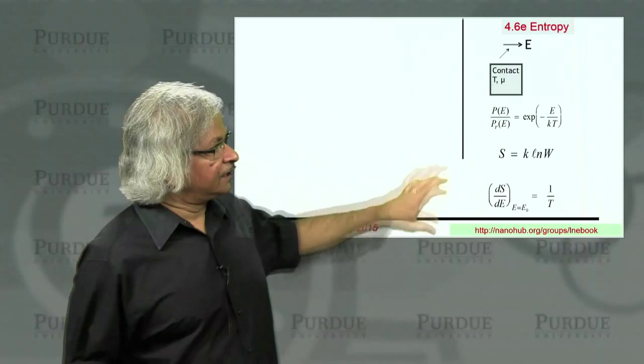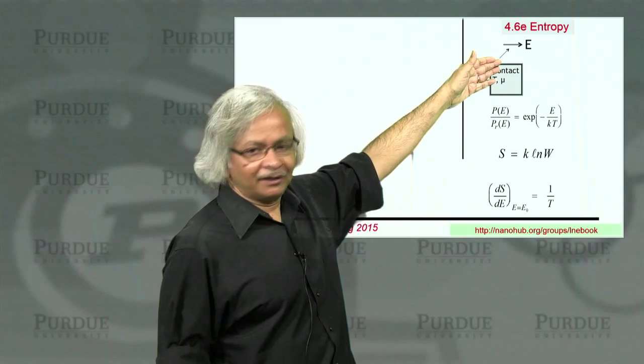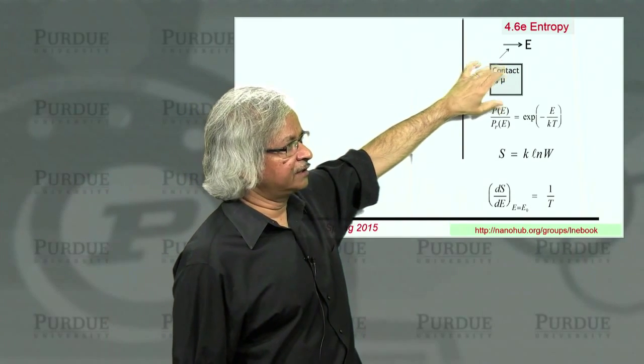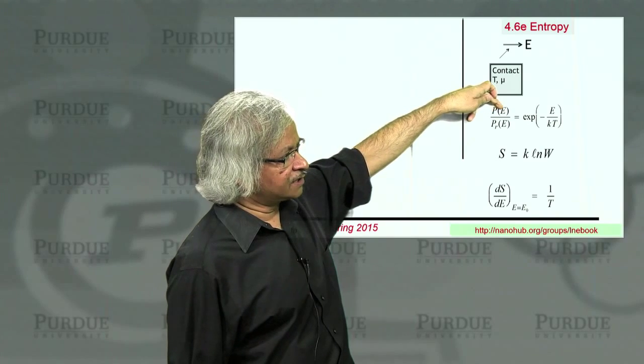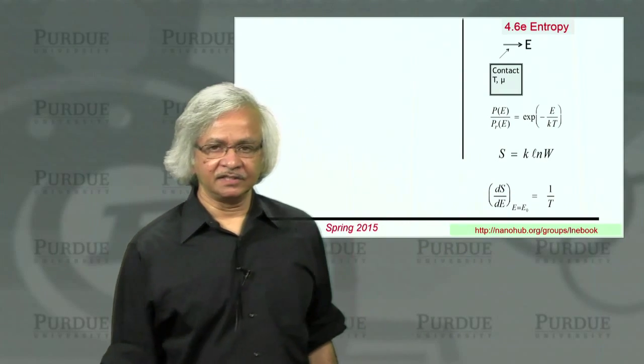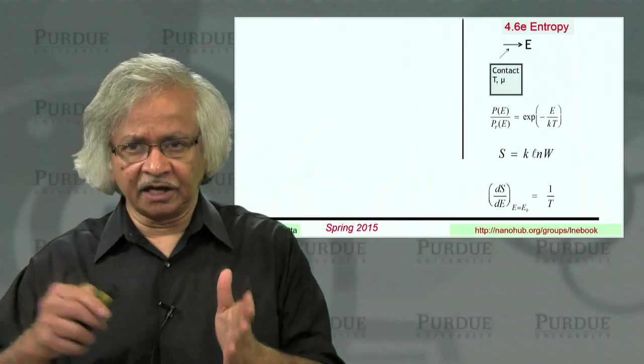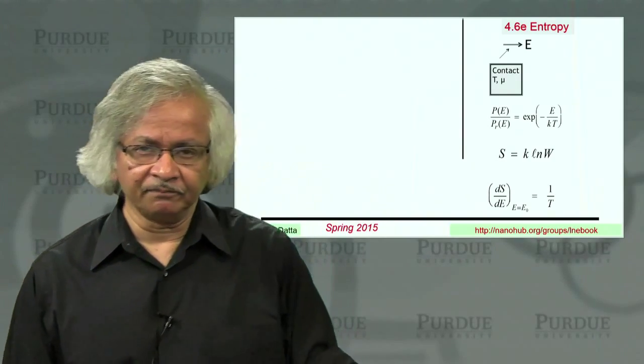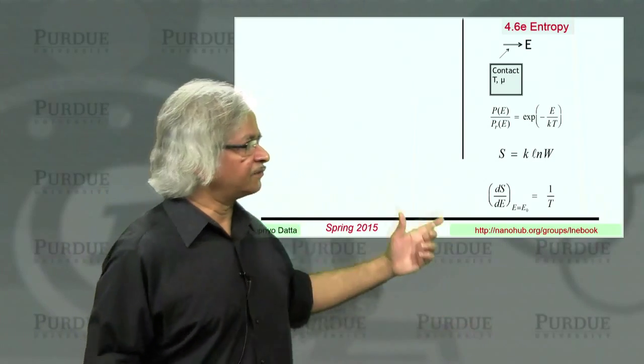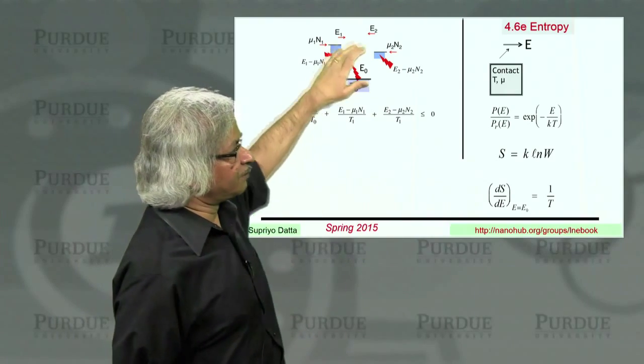And in terms of this k then, we have this relation that whenever you have a contact and you want to take energy from it, this process of taking energy and the reverse process, the ratio will be this e to the power minus e over kT. And what we'll show later is how this leads to the law of equilibrium in general. But right now, I just wanted to mention that in terms of entropy, you could write the second law in a slightly different way.